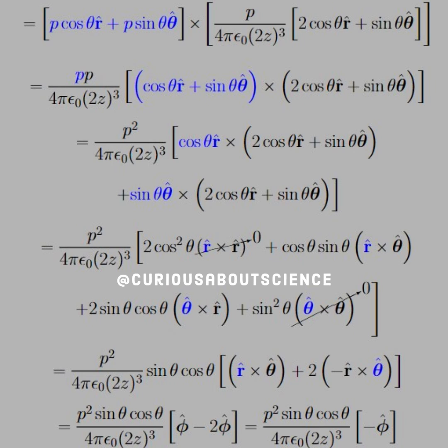If you recall, though, a cross product of a vector with itself is always zero, so R hat cross R hat and theta hat cross theta hat go to zero. Also note that in the cross product, we have anticommutativity, which means that theta hat cross R hat is equal to negative R hat cross theta hat, and that's what we see in the line below.